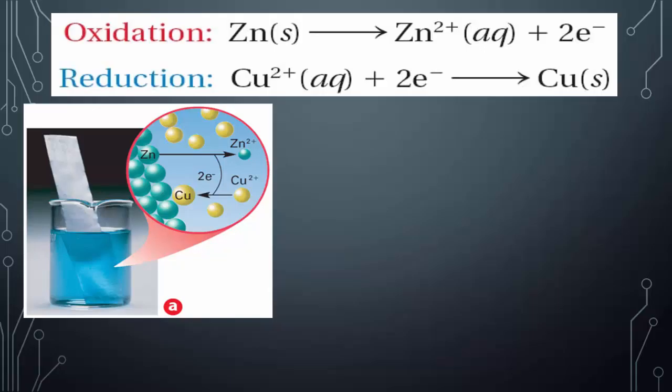Using Table J, you have to look up zinc and copper. Wherever they fall will determine who is going to be oxidizing or losing electrons, and who is going to be reduced or gaining electrons. Looking at Table J, copper is below zinc, so zinc is higher up on the activity series. That is why the half reaction for solid zinc shows it losing electrons. Copper, because it is lower, is being reduced — gaining those two electrons and making solid, neutral copper.